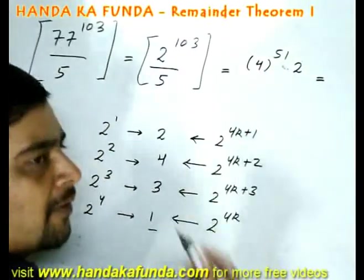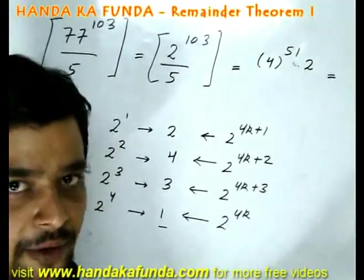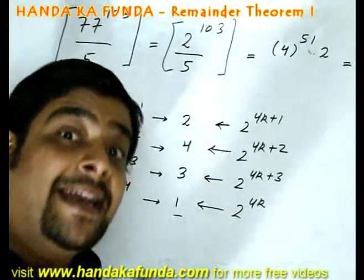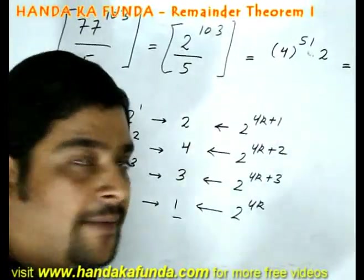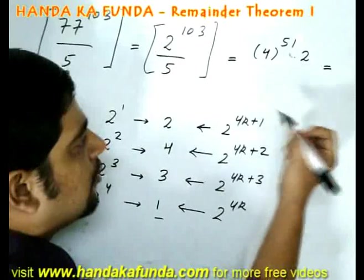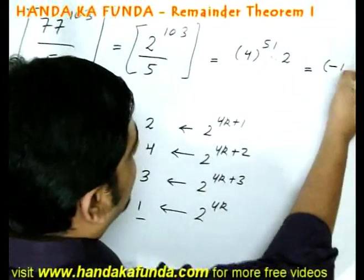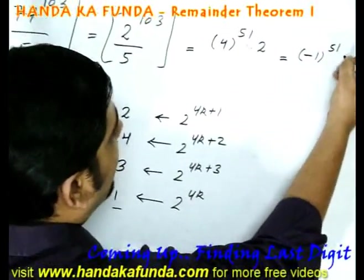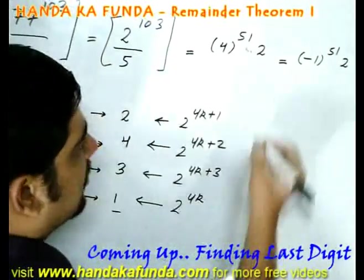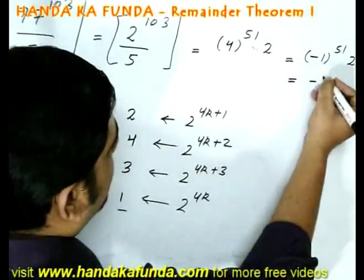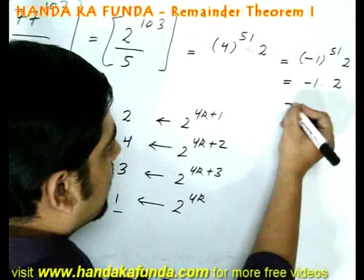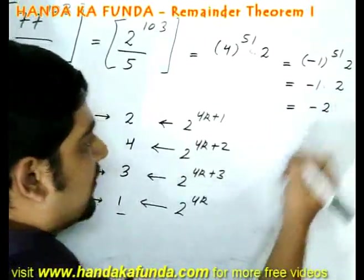Now what is the remainder of 4 from 5? It is 4. We all know that. But if we look at the negative remainder, it is minus 1. So instead of 4 to the power of 51, it can be written as minus 1 to the power of 51 into 2. And that is as good as minus 1 into 2, which is as good as minus 2.